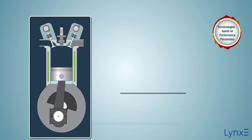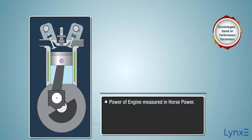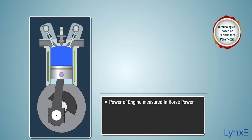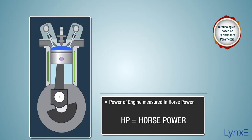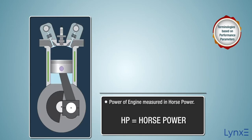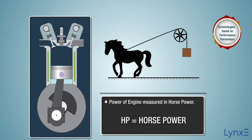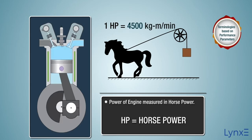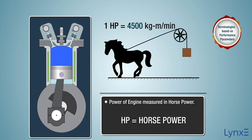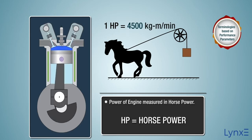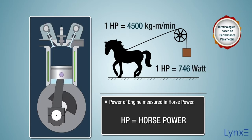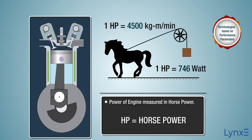The rate at which the engine can do work is measured in horsepower, or HP. One horsepower is equal to 4500 kilogram-meters per minute, and in terms of watts, it is 746 watts.